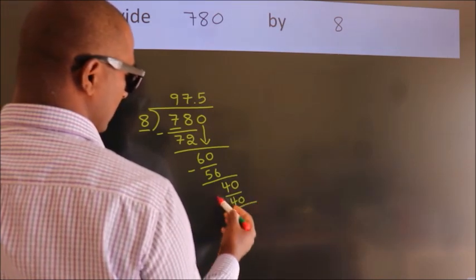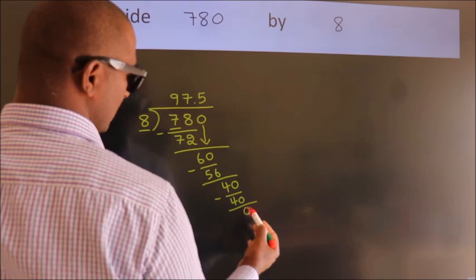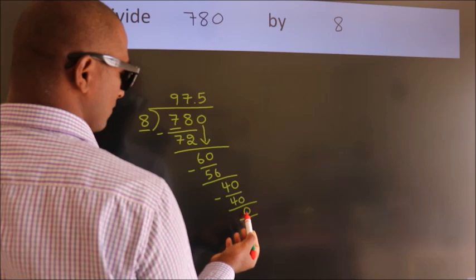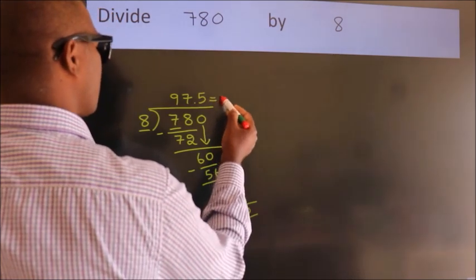Now, we subtract. We get 0. Here, we got remainder 0. So, this is our quotient.